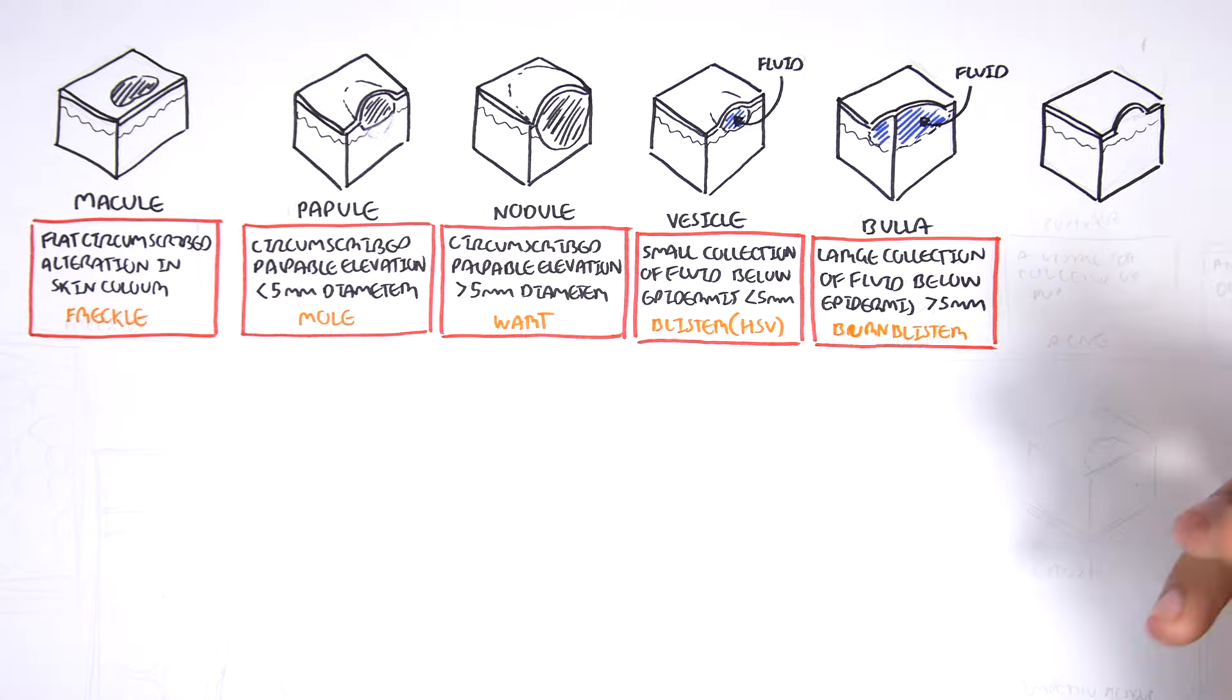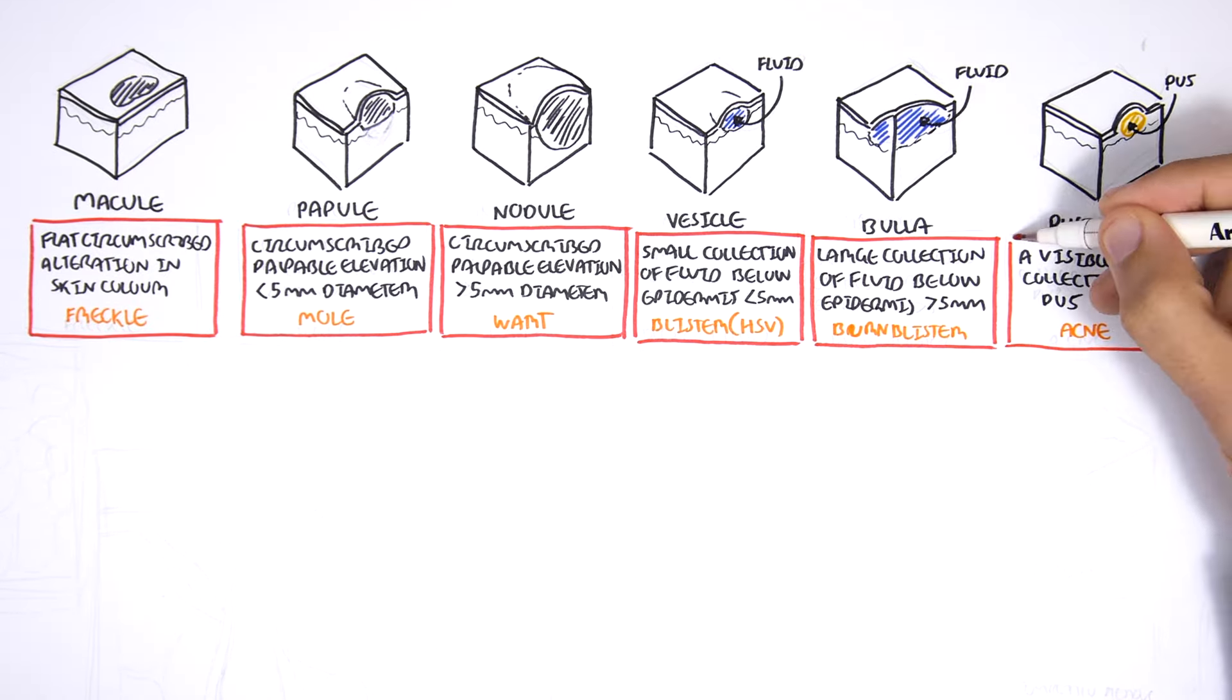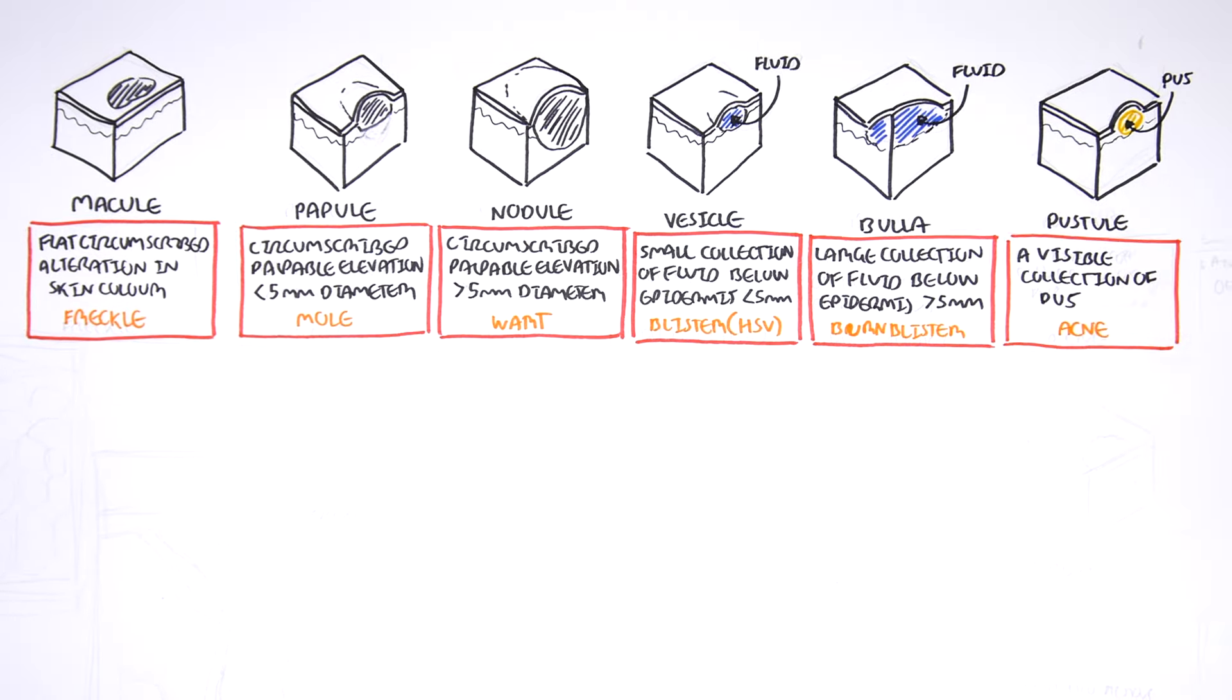The one up from a papule is known as a nodule. A nodule is a circumscribed palpable elevation greater than 5 mm in diameter. An example of a nodule is a wart.